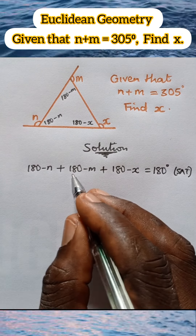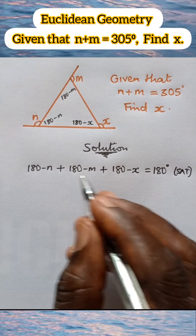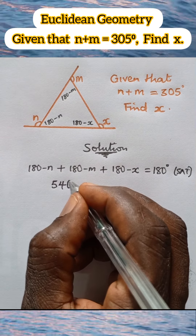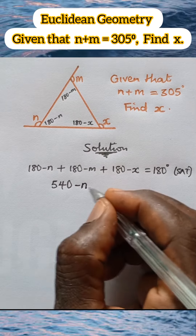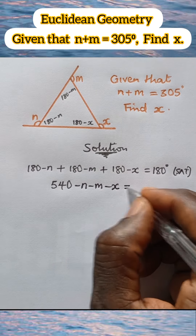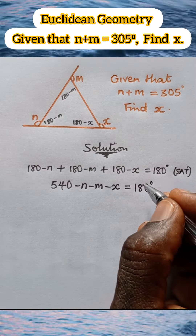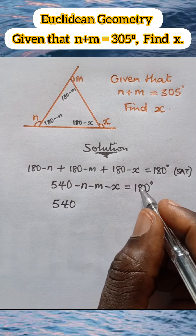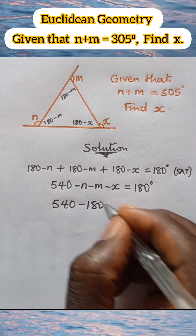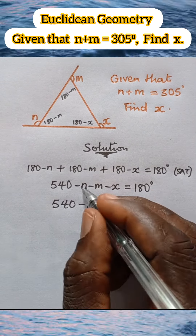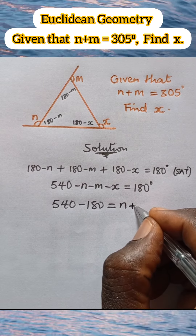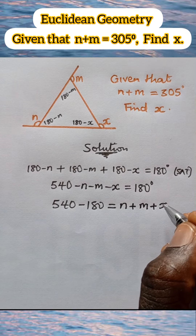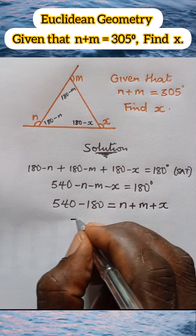Let us add the numbers up: 180 plus 180 is 360, plus 180 is 540 degrees. So we have 540 minus n minus m minus x equal to 180 degrees. We transfer 180 to give 540 minus 180, which equals n plus m plus x. 540 minus 180 is 360 degrees.